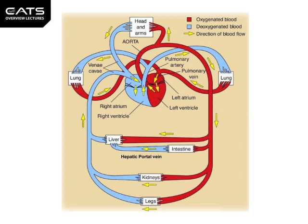The pulmonary vein drains into the left atrium. With the squeeze of the heart, this goes into the left ventricle, which is more thickened and muscular than the right ventricle, because it has to push blood to the entire body. It does this via the aorta, the largest blood vessel in the body, which branches into arteries.